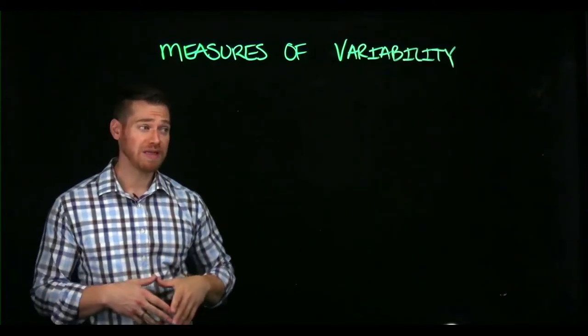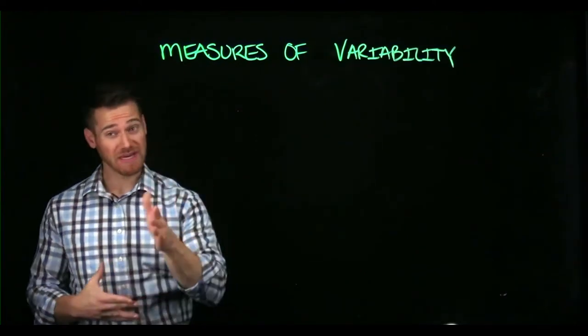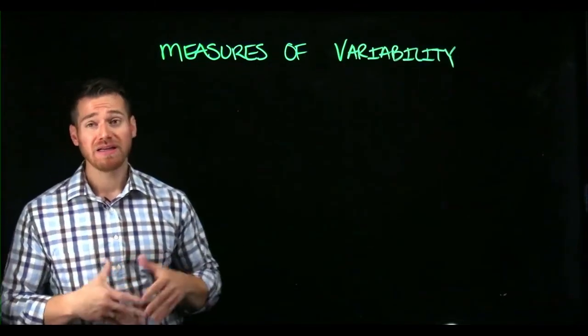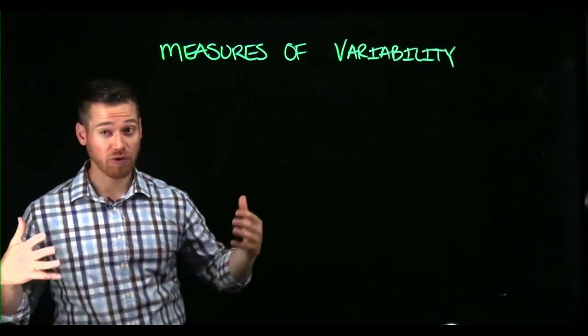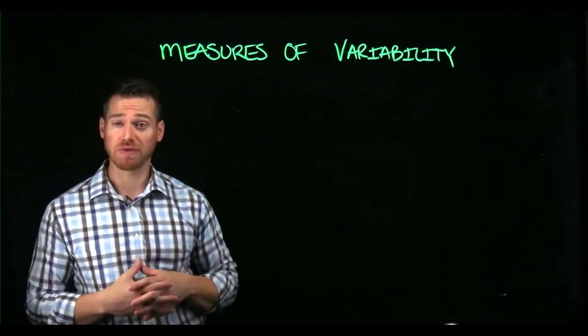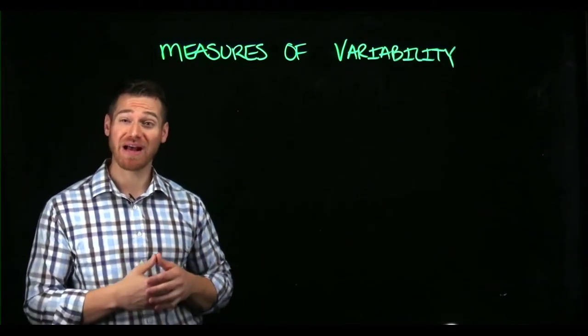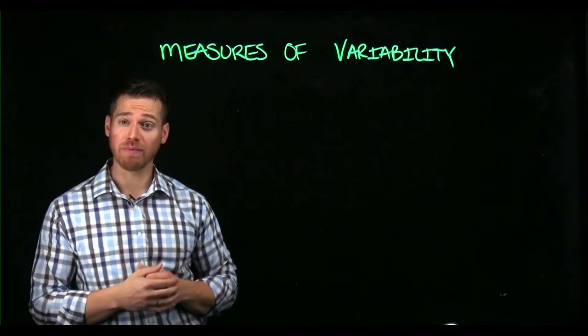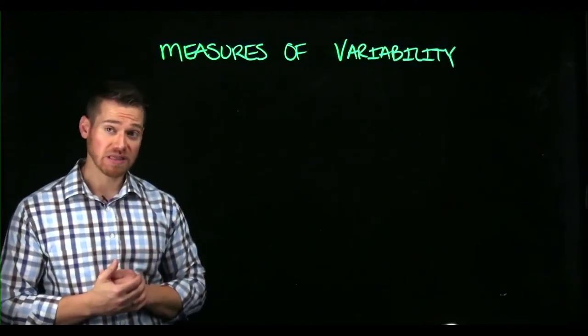In chapter four, we extend our discussion from central tendency to variability. Central tendency is about how scores aggregate towards the middle or center of a distribution. Variability is about how scores spread around that center point. There are a few different ways we can summarize this.